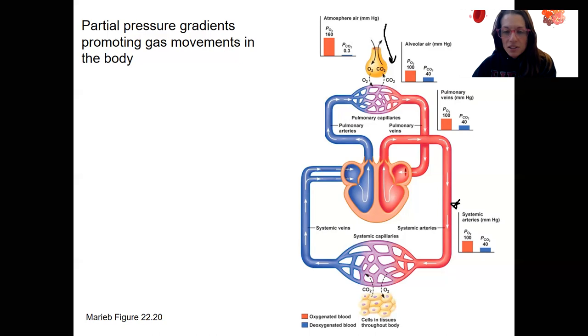So what's going to happen at the systemic capillaries? You know what happens, right? The cells are going through cellular respiration. And when they do this, they are producing CO2 and using oxygen. That is why CO2 is going this way and oxygen is going this way.